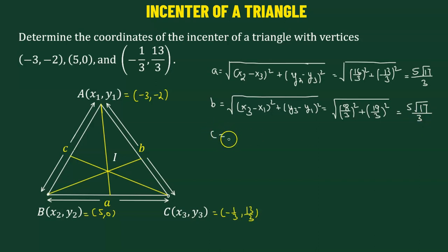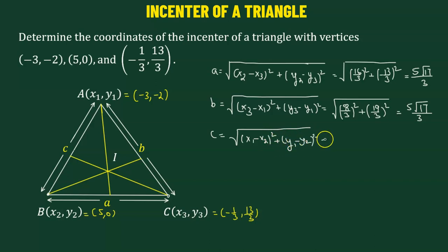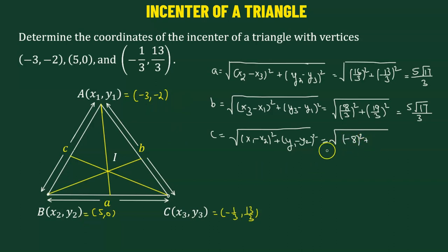Now let's find the value of c. We take the square root of x1 minus x2 squared plus y1 minus y2 squared. That's negative 3 minus 5, which is negative 8, squared. Added to y1 minus y2: negative 2 minus 0, which is negative 2, squared. This corresponds to the value 2 times square root of 17.